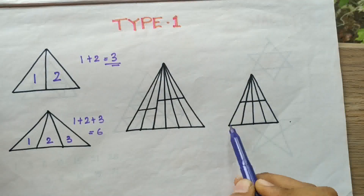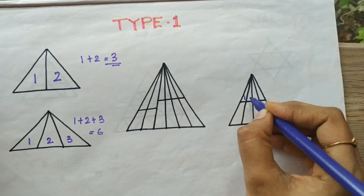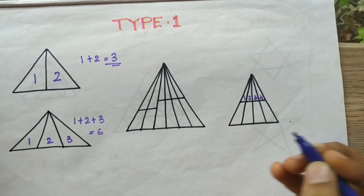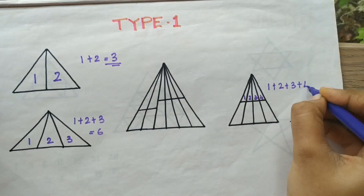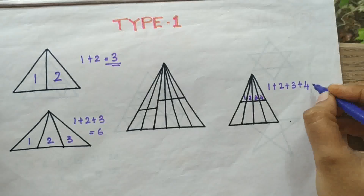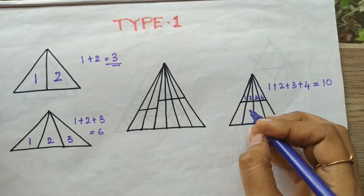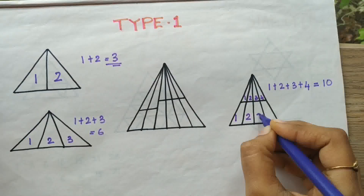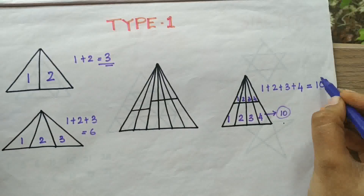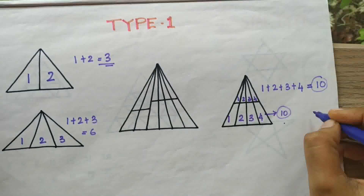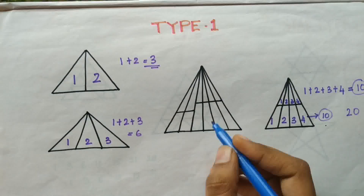What if it has two bases? Here we can see it has two bases. Let's try finding for the first base: one, two, three, four — so one plus two plus three plus four equals ten. Now let's try for the bigger triangle: one, two, three, and four — again it is ten. So ten plus ten equals twenty.